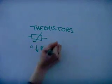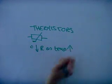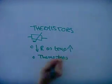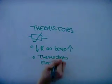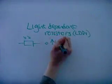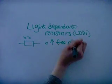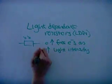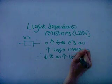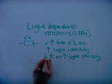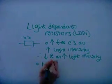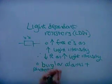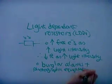Thermistors are special types of resistors which decrease in resistance when the temperature increases. They are used in thermostats and fire alarms. Light-dependent resistors, otherwise known as LDRs, are special types of resistors which increase the number of free electrons when the light intensity increases. They are used in burglar alarms and photographic equipment.